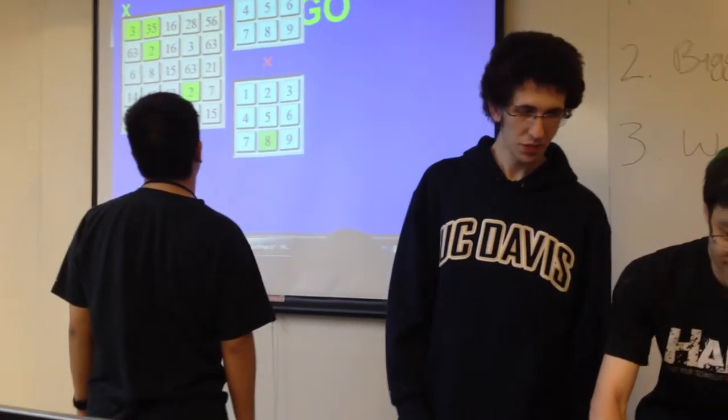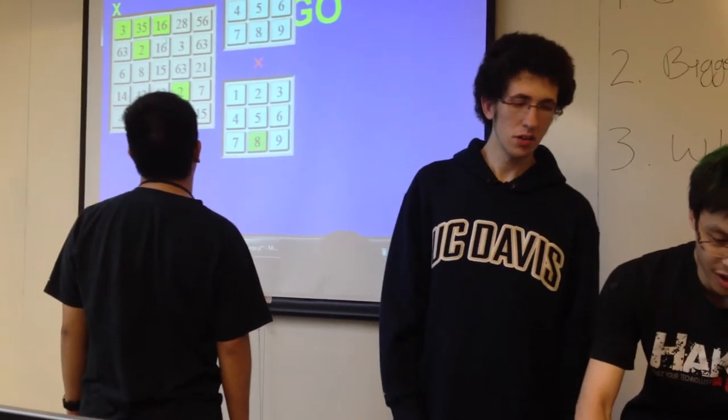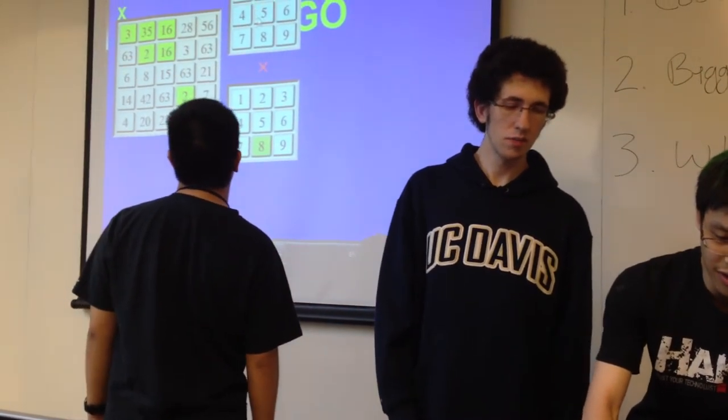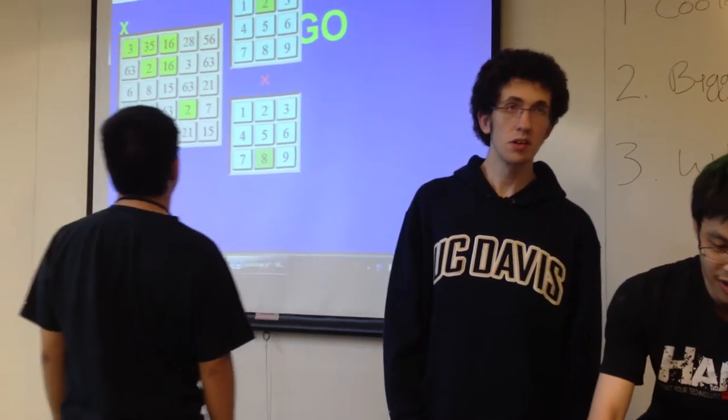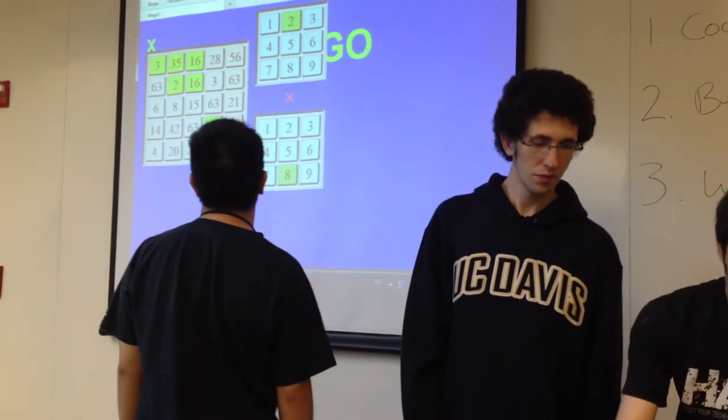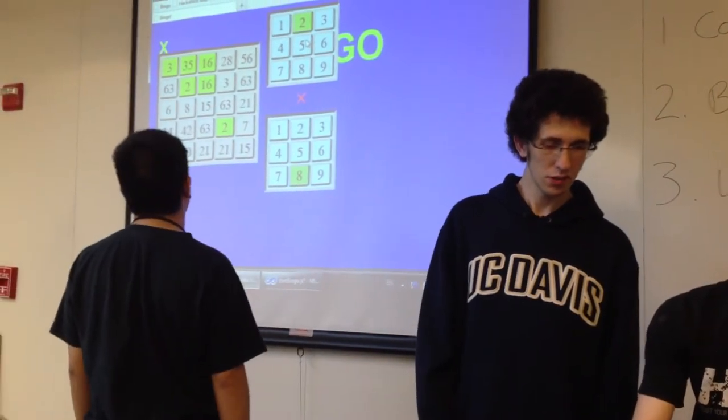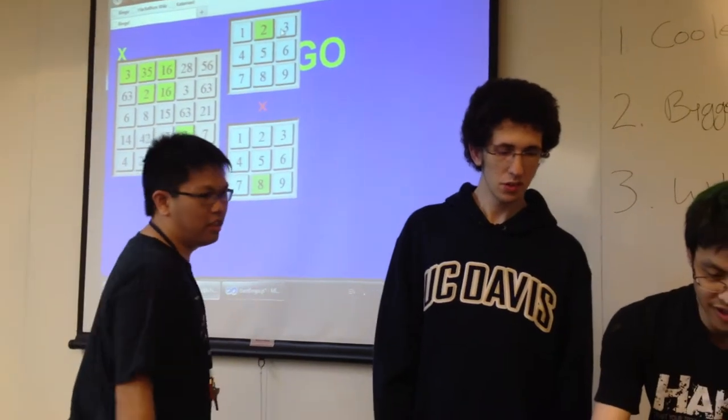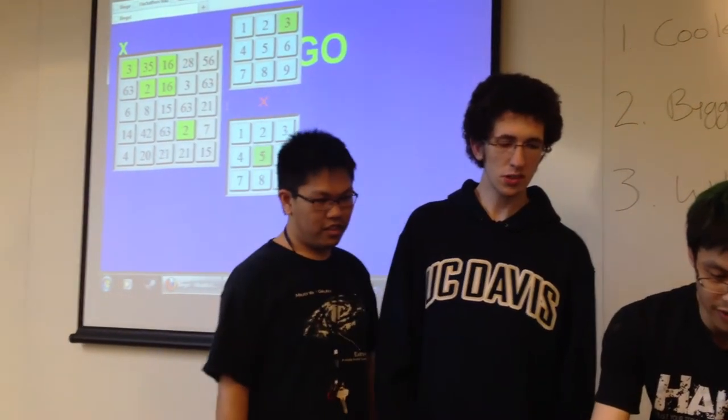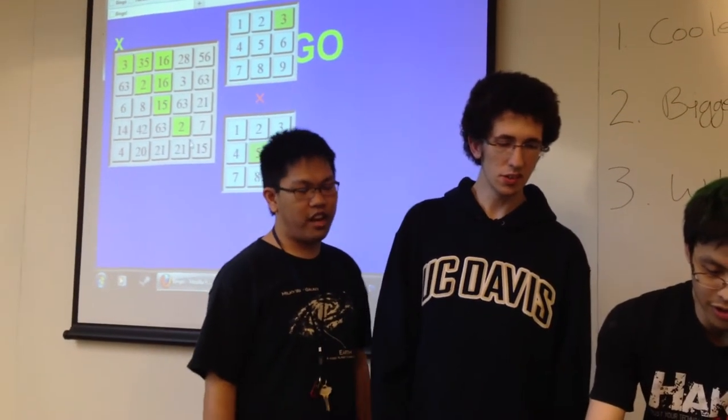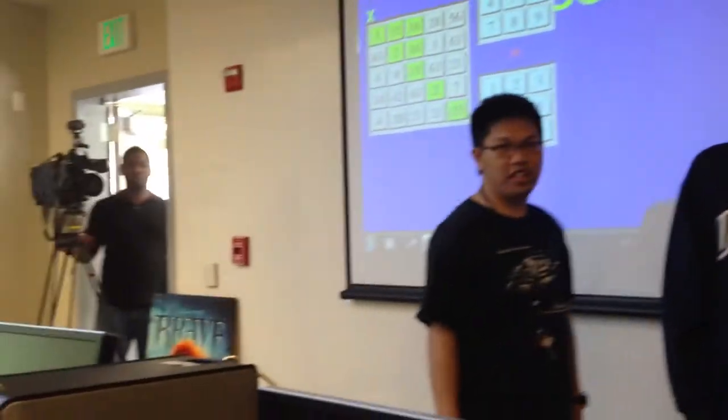So you can't do the same numbers? You can't change one number and make it like... Oh yeah, you can use the same number. Okay, so if you do three times five, you'll win. Three times... Which one? Five times three or three times five, you'll get those fifteens.